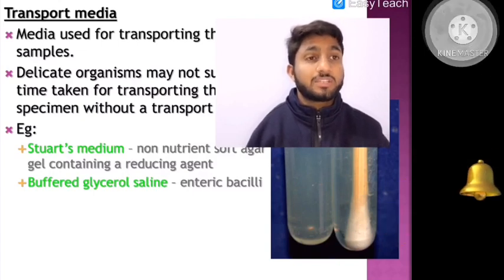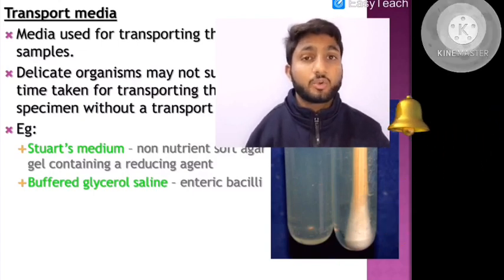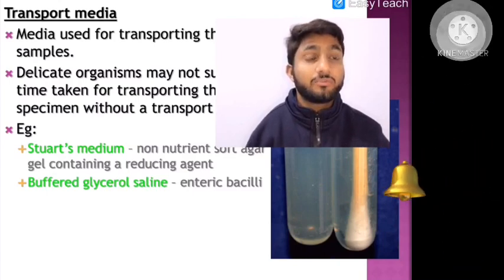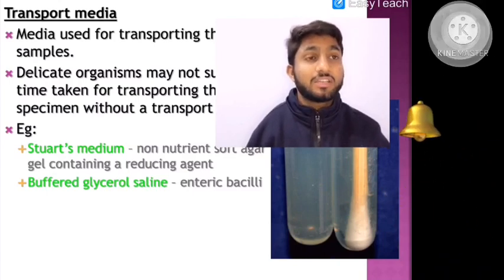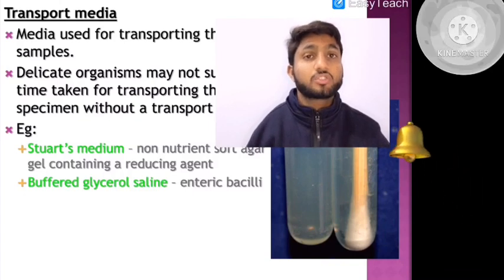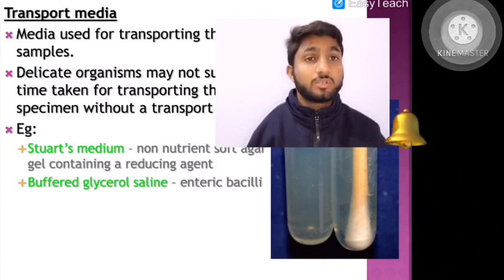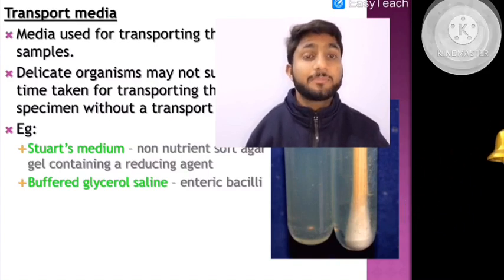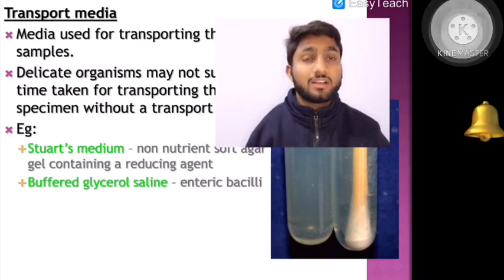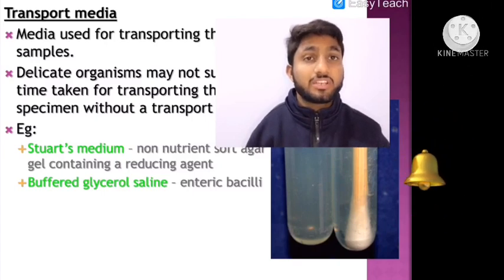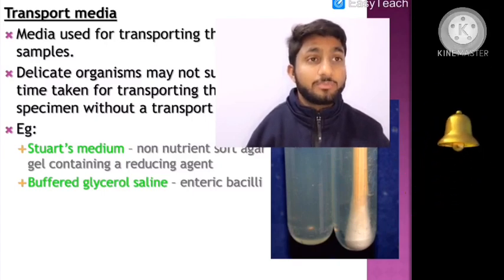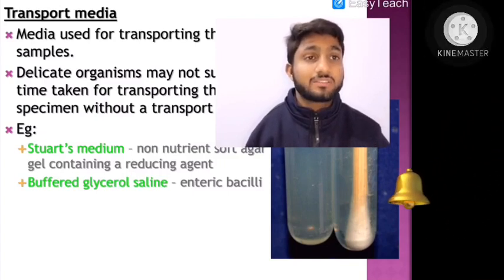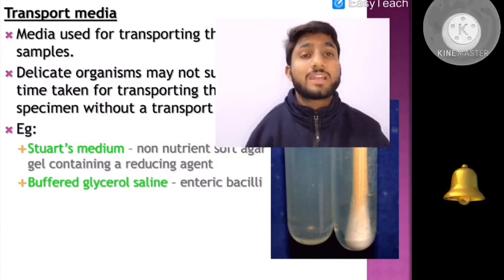For example, some bacteria are anaerobic in nature and do not require oxygen to survive. If we provide them oxygen, their growth pattern will be affected. For such bacteria, we need to add a reducing agent like sodium thioglycollate, which acts as an anaerobic or reducing agent to remove oxygen from the medium, allowing anaerobic bacteria to survive.